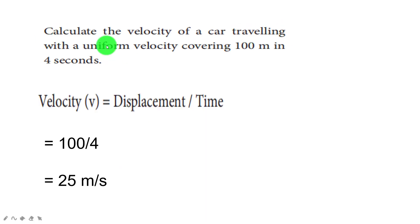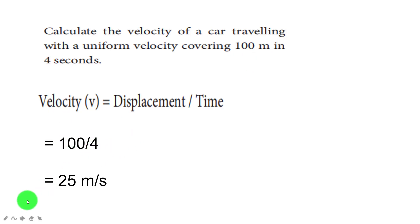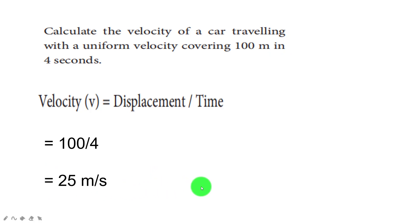Problem: Calculate the velocity of a car travelling with uniform velocity, covering 100 meters in 4 seconds. Velocity equals displacement by time: 100 divided by 4 equals 25 m/s. So the velocity of the car is 25 m/s.